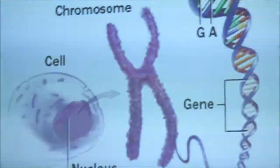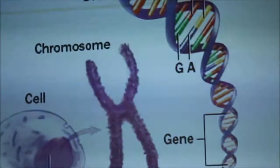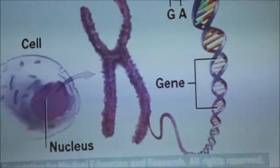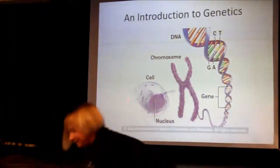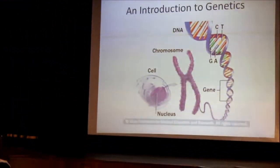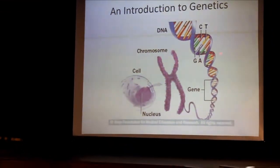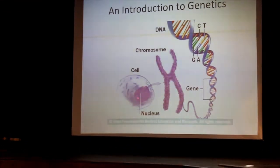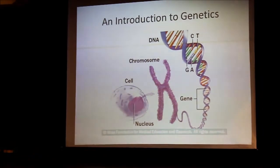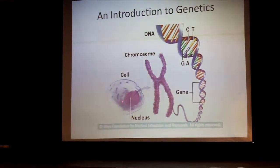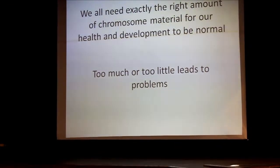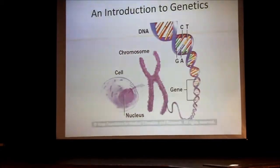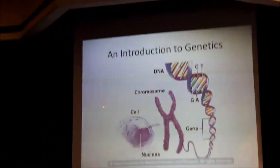Just starting off by going over some of the genetic terms. Most of you will know that we're made up of building blocks called cells, and every little bit of us is made up of cells. In the middle of the cells of our body — the ones we look at mostly are the blood cells that we can see under the microscope — the central area called the nucleus carries little particles called chromosomes.